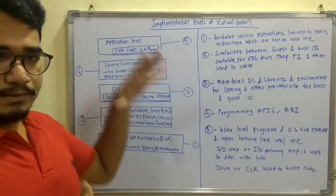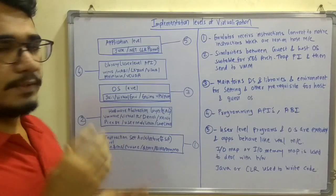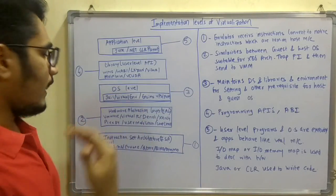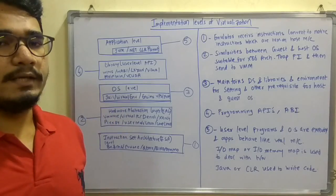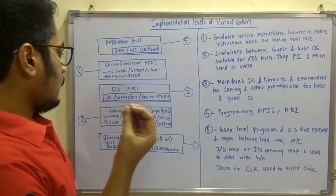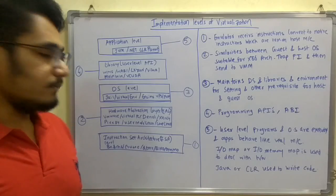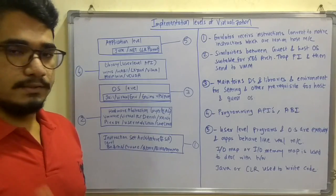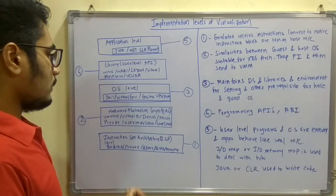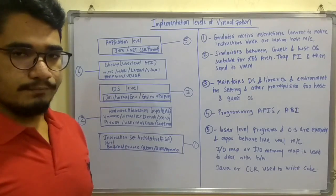Next I will discuss these levels in detail, but first let us cover a brief idea of what these levels are. Moving above ISA, we have the HAL layer, that is the Hardware Abstraction Layer, which has examples called VMware, Virtual PC, Denali, Xen, L4, Pix84, UserMod Linux, and Cooperative Linux.